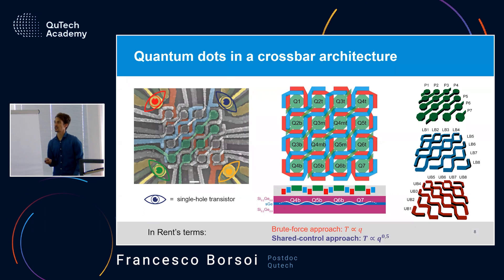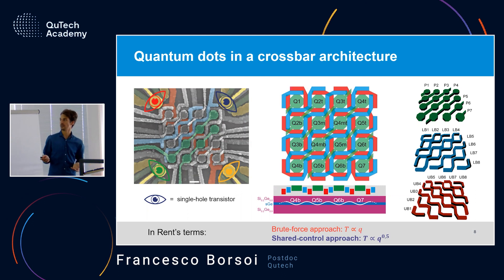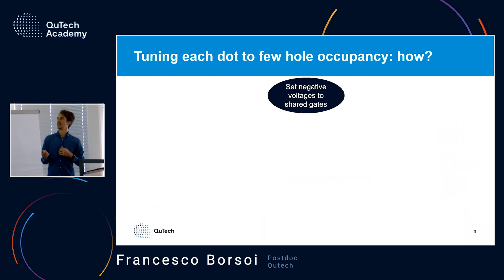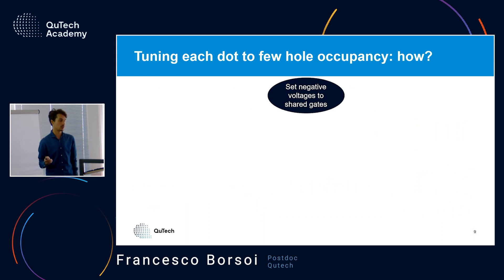This architecture is an important step because it enables downscaling the Rent exponent from one to 0.5, thanks to shared gates across the entire device. Now let me give an overview of what it takes to tune a 16-quantum-dot array.